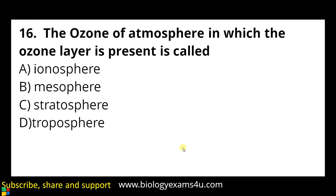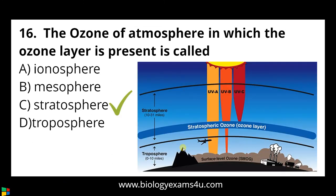Question number sixteen: the layer of the atmosphere in which the ozone layer is present is called — a) ionosphere, b) mesosphere, c) stratosphere, d) troposphere. The answer is stratosphere. Ozone is present in the stratosphere, which is from 10 to 31 miles from the surface.